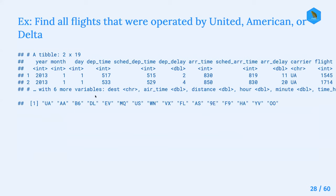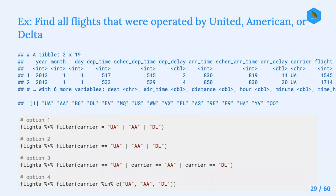United would be UA, American would be AA (American Airlines), and Delta would be DL. There are four different options listed here for how we might find all flights operated by United, American, or Delta - people might consider which option they'd use with the filter function.